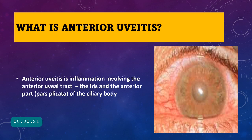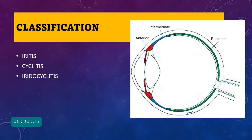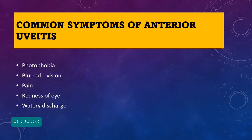Anterior uveitis is the inflammation involving the anterior uveal tract, that means the iris and the anterior part of the ciliary body, that is the pars plana. According to the SUN group, anterior uveitis can be classified into iritis when it involves only the iris, cyclitis when it involves only the ciliary body particularly the pars plana, and iridocyclitis when it involves both the iris and the ciliary body.